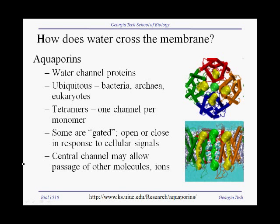In another video, we talked about osmosis, which is the process where water crosses cell membranes. But how do water molecules cross membranes? After all, water molecules are polar, and we all know that polar molecules cannot cross the hydrophobic lipid bilayer membrane. Indeed, water molecules have a very hard time crossing a pure lipid bilayer membrane. So how does osmosis occur in living cells?